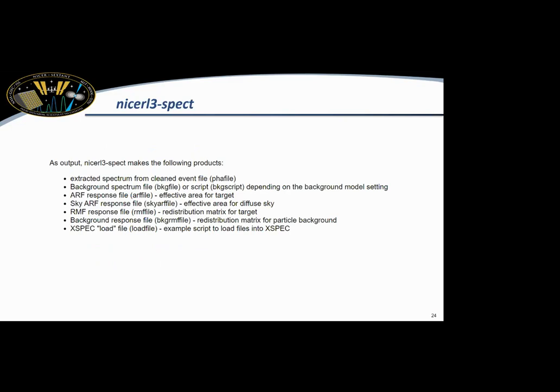So as output, these are the files you'll get. So you get an extracted spectrum of your source, a background spectrum file or script. So the spectrum file will actually be subtracted. And that's in the case of 3C50. But for Scorpion, it will be an actual model. You'll get the ARF and the sky ARF. So one is for the source and the sky one is for your actual sky background, which we'll also come to in a few minutes. And then you get your response matrix, your background response matrix, and the load file, which brings it all into XSPEC for you.